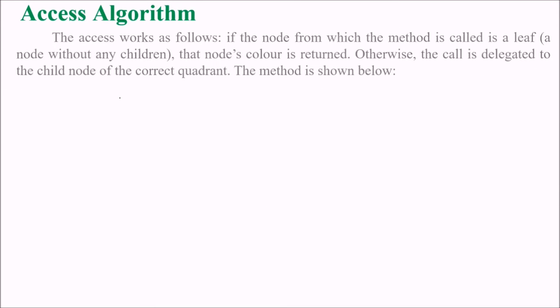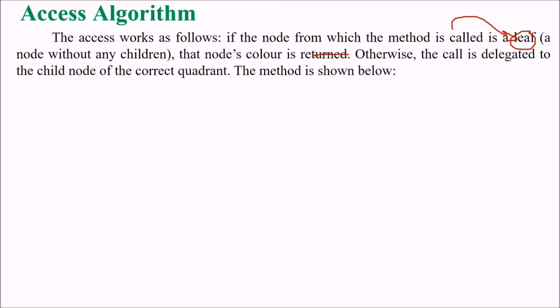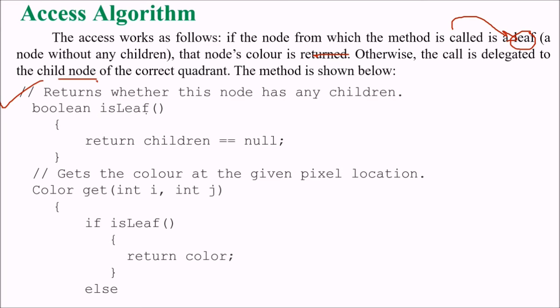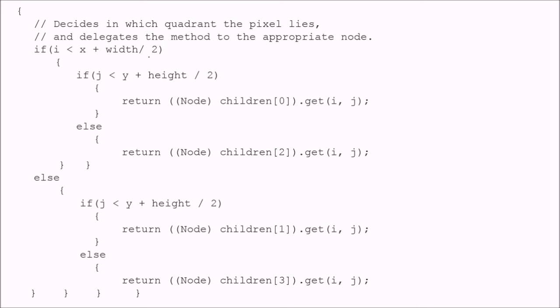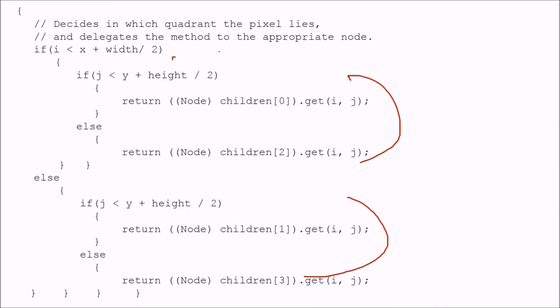Now we implement the access algorithm. If the node from which the method is called is a leaf — a node without any children — that node's color is returned. Otherwise, the call is delegated to the child node of the correct coordinate. The isLeaf method returns true if the node has no children. The getColor method returns the color at a given pixel location, or decides which quadrant the pixel lies in and delegates to the appropriate child node across four conditions.